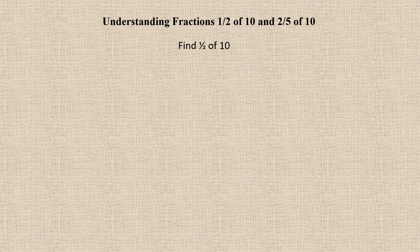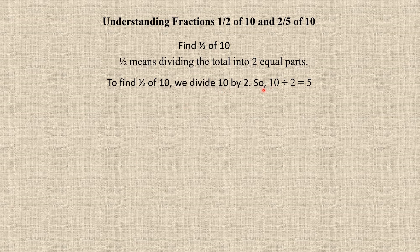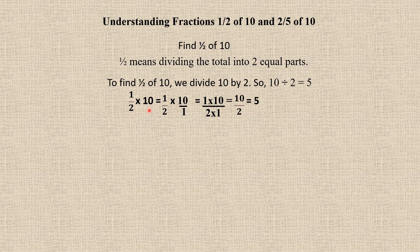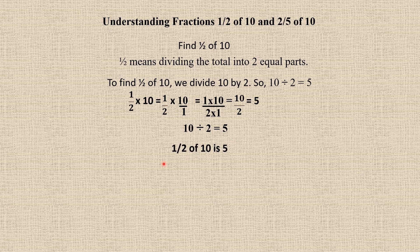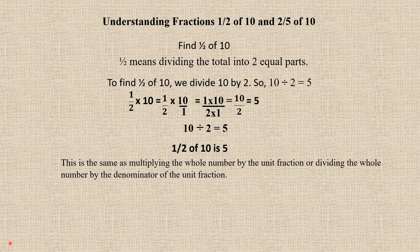Let us take one more example with a different whole number: find half of 10. Half means dividing the total into two equal parts. To find half of 10, we divide 10 by 2, so 10 ÷ 2 = 5. It can be written as 1/2 × 10 = 1/2 × 10/1. Multiply the numerators together and denominators together: 10/2 = 5. This can also be written as 10 ÷ 2 = 5. So half of 10 is 5 — the same as multiplying the whole number by the unit fraction, or dividing by the denominator.